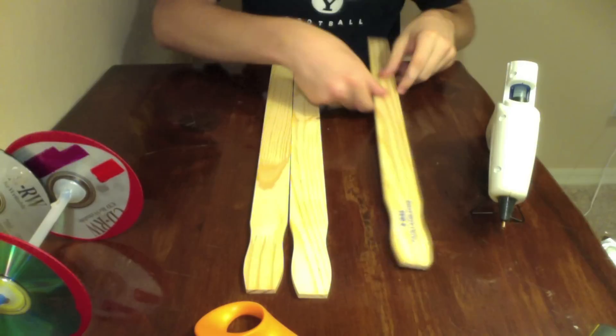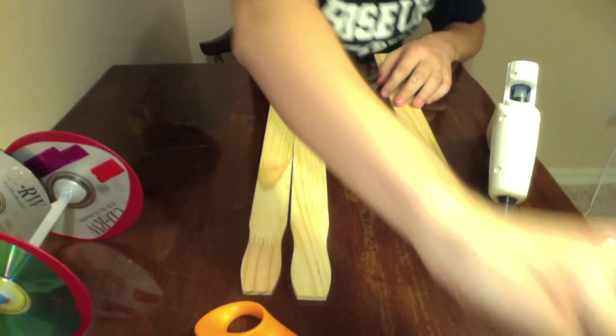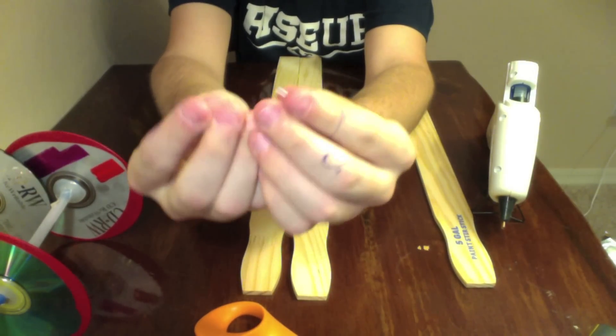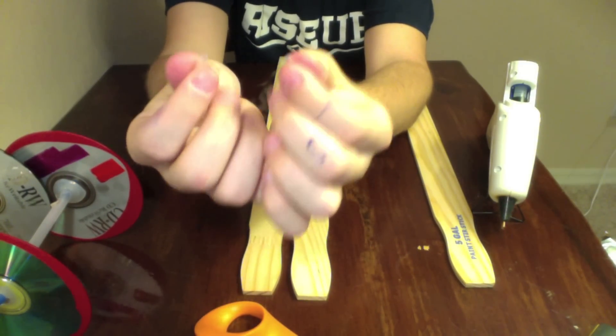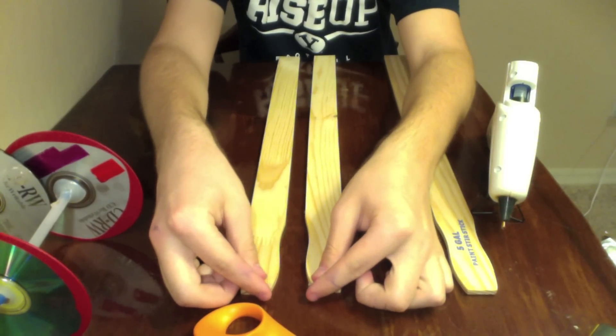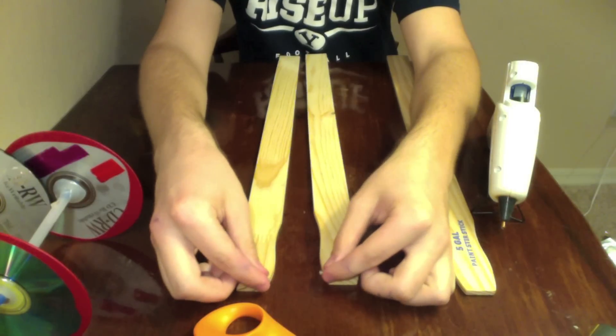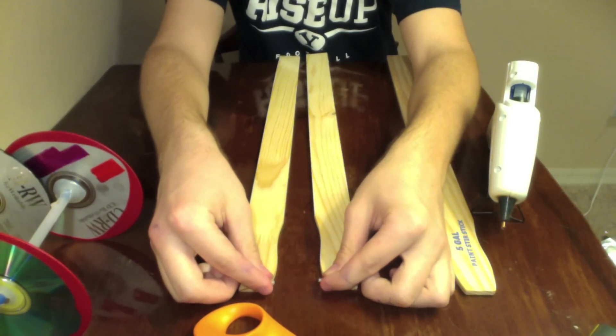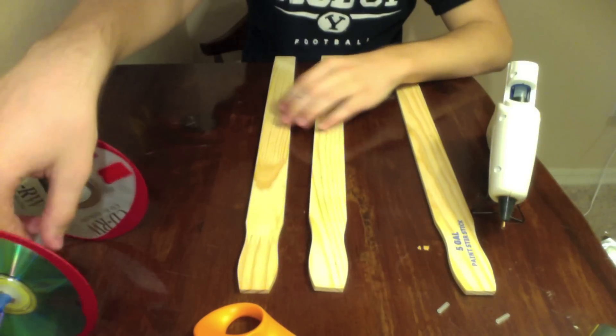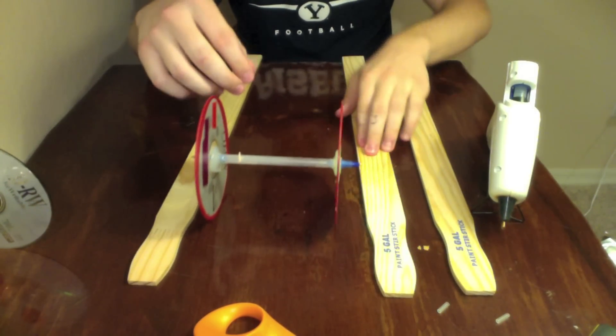So the way this works is at the end of this, you're going to have these ink holders glued to the ends of your frame. So they're going to be on there just like that, and your wheels are going to sit inside of those. So what we want to do now is space these so the wheel will fit in better.